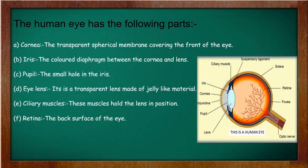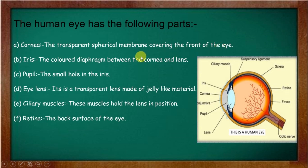Now let's see the parts of the human eye. The cornea is the transparent spherical membrane covering the front of the eye — it is the eye's first and outermost covering. The iris is the colored part of the eye, located between the cornea and the lens.